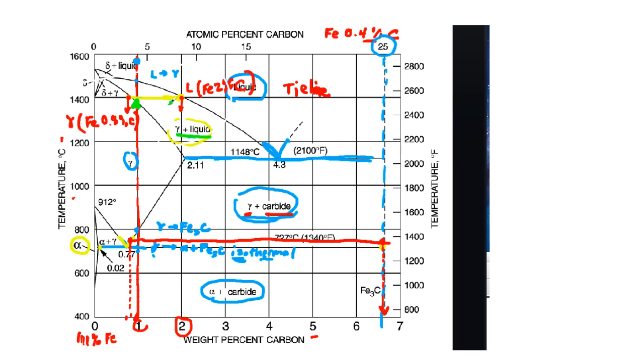So we have an x-axis weight percent carbon, so this endpoint is roughly 2% carbon for liquid. And then this other one for gamma is roughly 0.8% carbon inside the gamma.